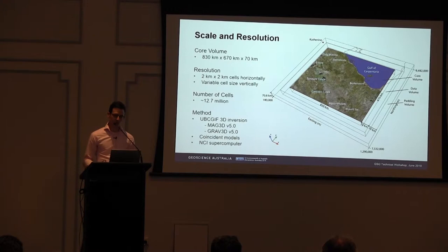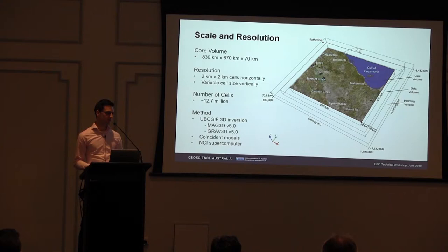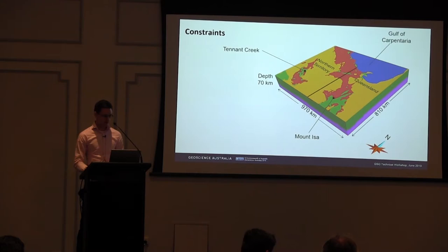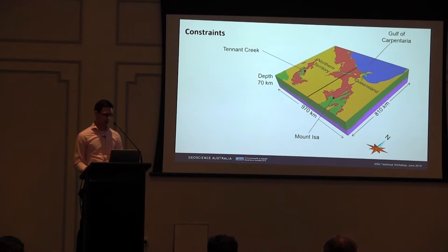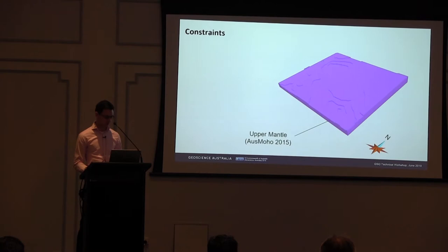We're using the UBC inversion method and creating coincident models — a separate magnetic susceptibility model and a separate density model, but each with coincident cells so we can interrogate both properties for the same location. The models are constrained with a generalised geological model to help us constrain some important features that we don't want influencing the inversion result within our area of interest.